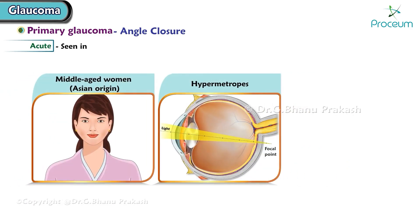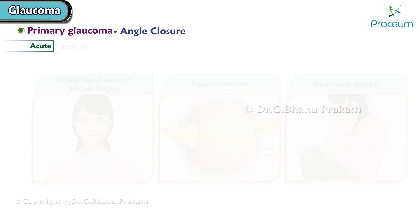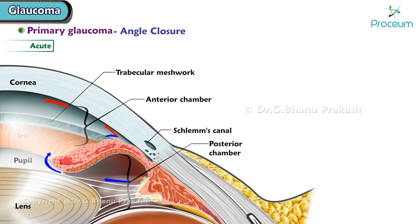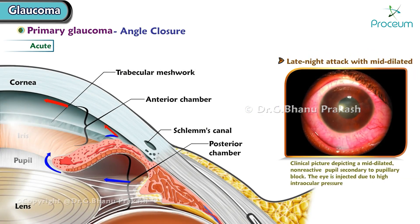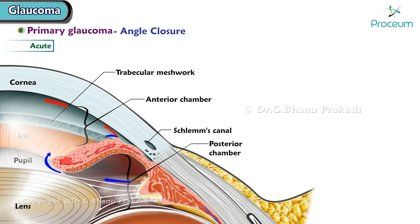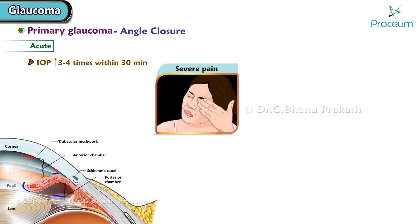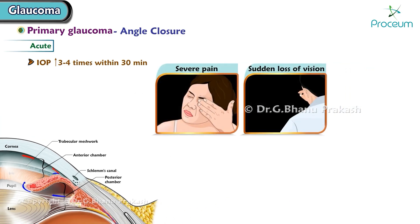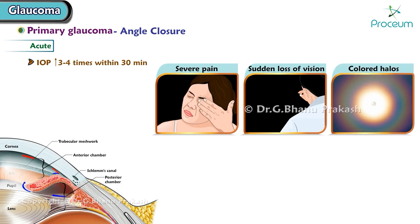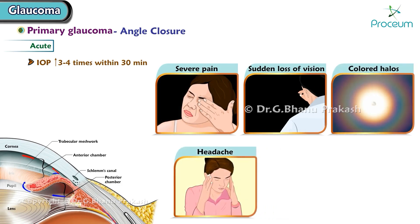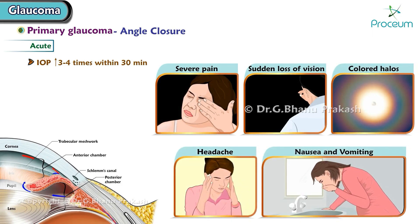It is also seen in hypermetropes and during emotional distress. It is mostly a late night attack with a mid-dilated pupil of six to eight millimeters. Intraocular pressure increases three to four times within 30 minutes. Patients present with severe pain, sudden loss of vision, colored halos, headache, nausea, and vomiting.